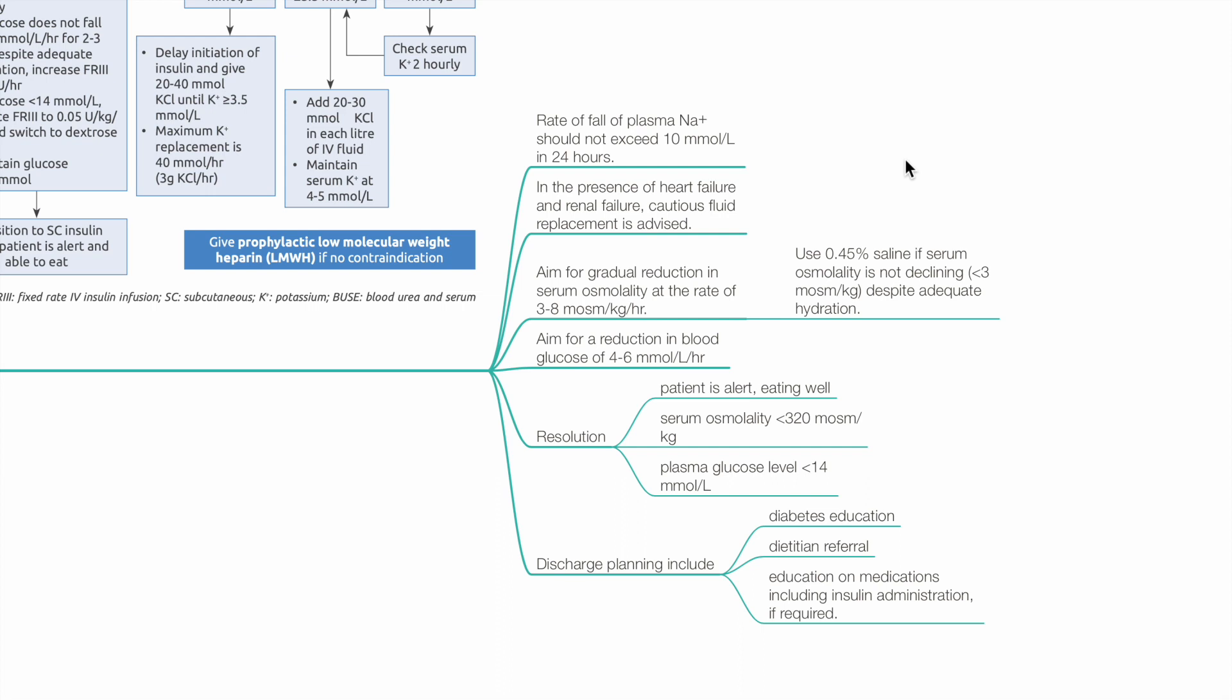Aim for reduction in blood glucose of 4-6 mmol per liter per hour. Resolution of HHS is defined as patient alert, eating well, serum osmolality less than 320, plasma glucose level less than 14. Discharge planning should include diabetic education, dietitian referral, and education on medications including insulin administration if required.